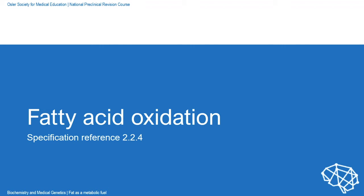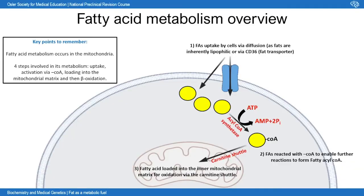Now we'll shift focus from storage to how fatty acids are oxidized for energy in energy-requiring tissues. Imagining that fatty acids have been liberated from adipocytes by HSL into systemic circulation, they eventually reach tissues like skeletal muscle. Fatty acids from the blood enter cells either through diffusion — since they're inherently lipophilic and can cross the phospholipid bilayer — or via the fat transporter CD36.